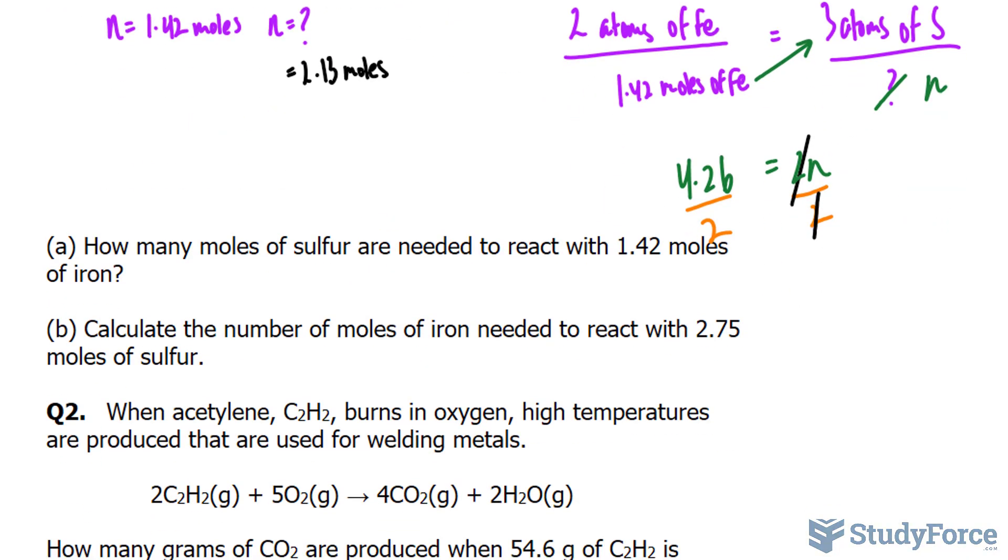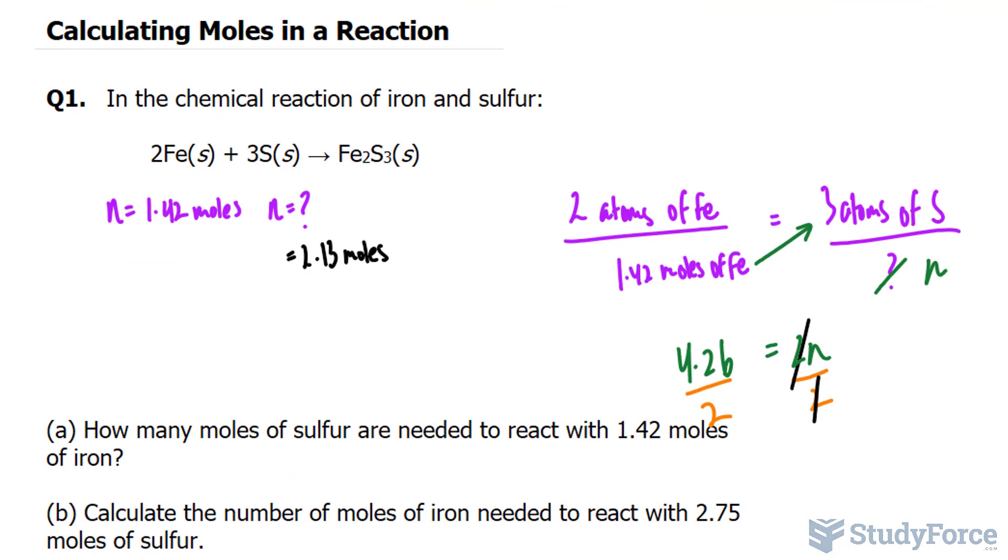Question B asks, calculate the number of moles of iron needed to react with 2.75 moles of sulfur. So once again, they're asking the same thing, except in a different order. They tell us the moles of sulfur, but we don't know the moles of iron. So let me just clear out my work here. And I'll write down N is equal to 2.75. And this time, we don't know the moles of iron.